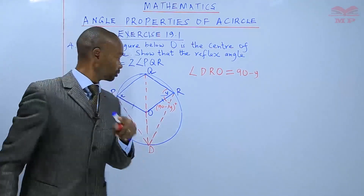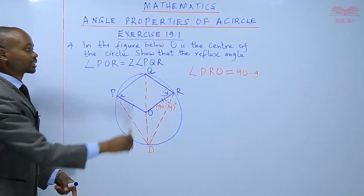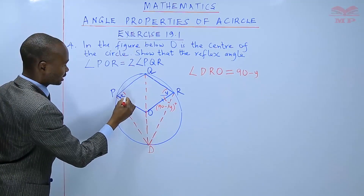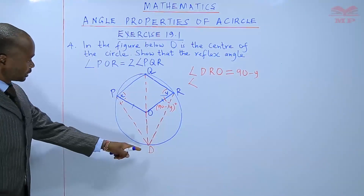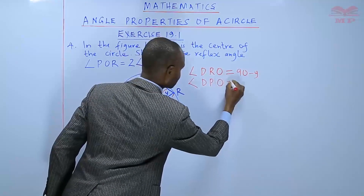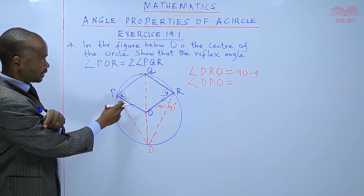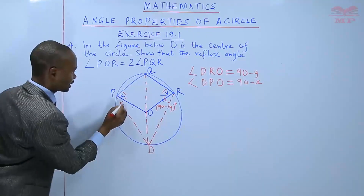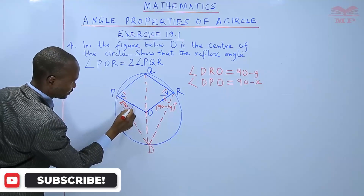I'll also come and get angle DPO. The same thing happens. Since this one is the diameter, it subtends a right angle here. Similarly, angle DPO will be equal to 90 minus X.